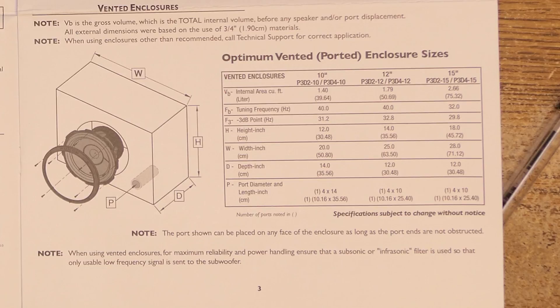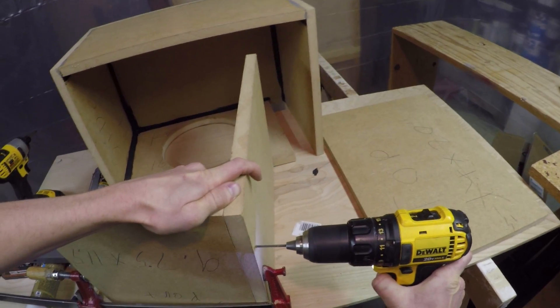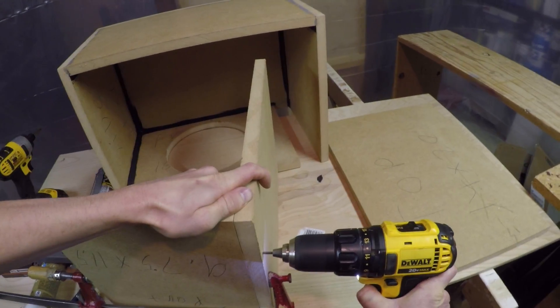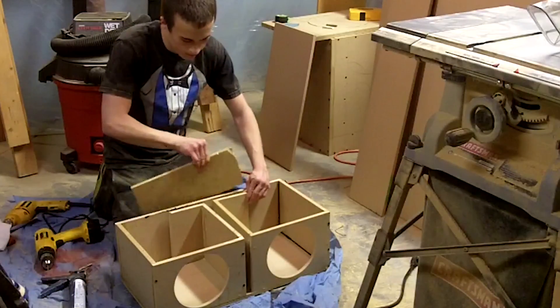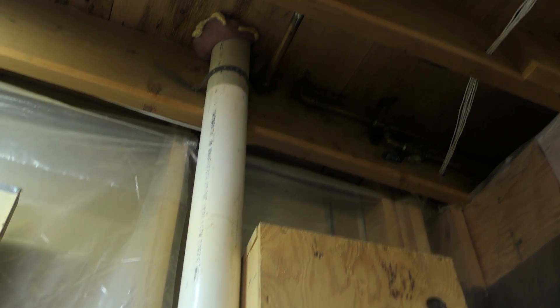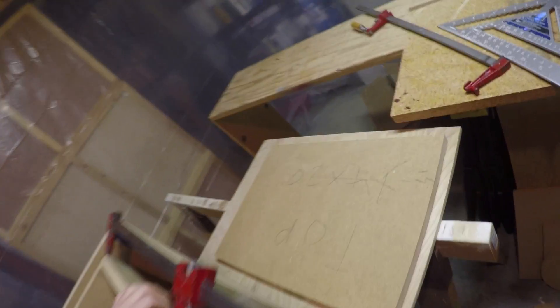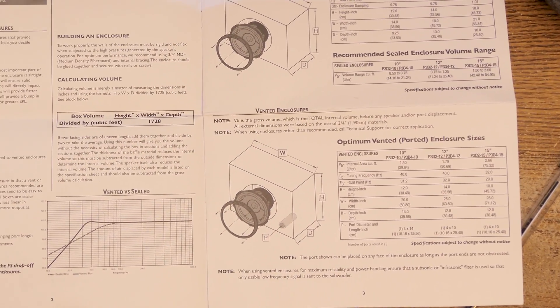They recommend using a round port which should have a 4 inch diameter and a 14 inch length. I personally have always used rectangular ports, so that's what I'm going to be using on this build. But, using a circular port will make it easier to build and design. All you would have to do is get a PVC pipe to match that spec, and you're good to go. But, since I'm going to be changing the port design, I'm going to go ahead and change the recommended box dimensions just a tad.